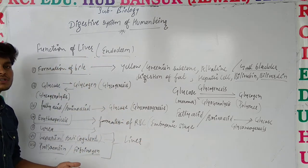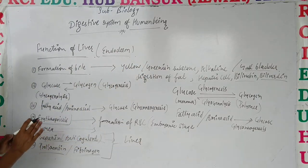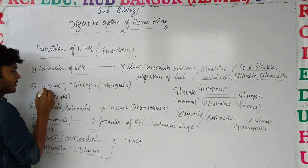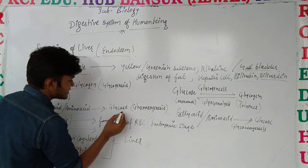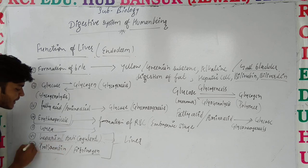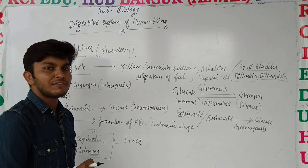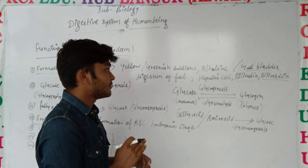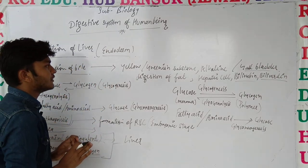Liver vitamins को भी synthesize करने का काम करता है। तो यह liver की कुछ important functions हैं: number one is formation of bile; second, it converts glucose into glycogen and glycogen into glucose; it converts fatty acids and amino acids into glucose (gluconeogenesis); blood is also formed in liver during embryonic stage; urea is formed; heparin, prothrombin, and fibrinogen proteins are also formed in liver. I hope you have understood all the functions of liver. Thank you.